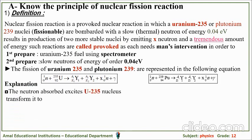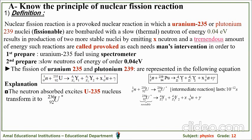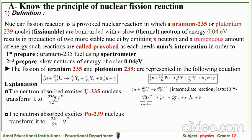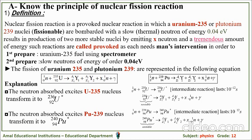As an explanation, the neutron absorbed by the uranium-235 nucleus transforms it into uranium-236, which is unstable and has excess energy. The neutron embeds inside the uranium-235, making it uranium-236, which is an intermediate reaction that lasts for 10⁻¹² seconds. The uranium-236, which is unstable, breaks into two daughter nuclei Y1 and Y2, emitting prompt neutrons and gamma radiation. The same applies to plutonium: the absorbed neutron transforms plutonium-239 into plutonium-240, with the same intermediate reaction explanation.